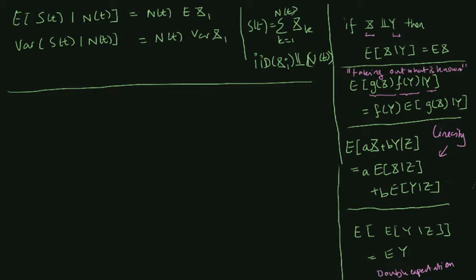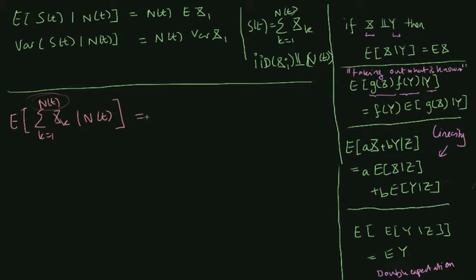Now we have established the rules, and we will start calculating. We consider the mean value of the total claim amount given N(t). We are not comfortable with something stochastic in the summation bound, so we rewrite the sum: let it go to infinity and take the bound with N(t) inside as an indicator, requiring k ≤ N(t) for the indicator to be 1.